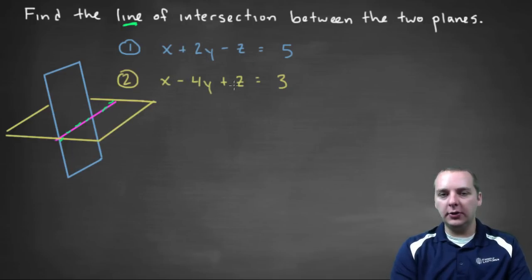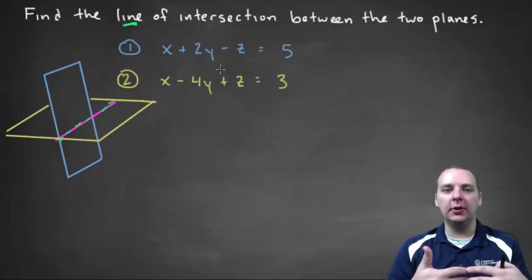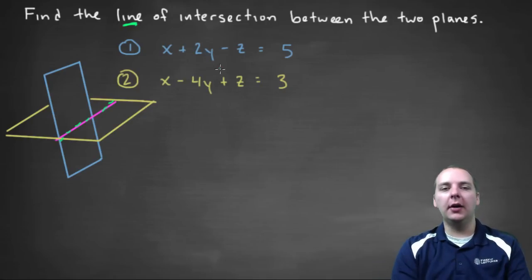Well, we're going to treat this guy almost kind of like a system of equations. Because you've got two equations with three unknowns, and what we're going to do is we're going to solve for one of the variables, like x or z, or somebody easy to solve for, and both of these guys, and set them equal to each other, and then kind of go from there.